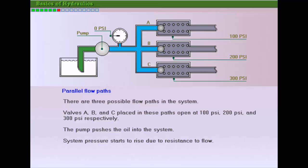The pump pushes oil into the system. The pressure gauge registers an increase in pressure, and the system pressure begins to rise. Now the pressure is around 100 psi, and valve A opens and the oil flows through.